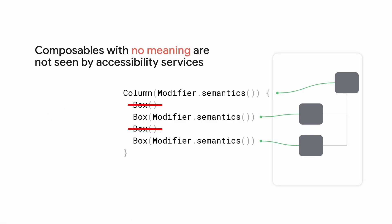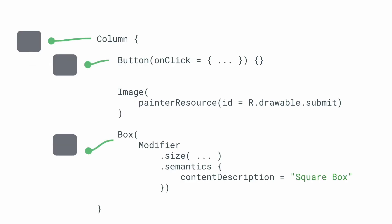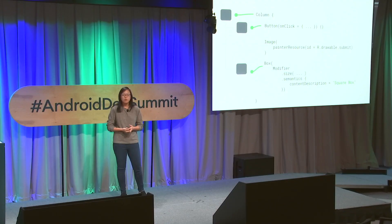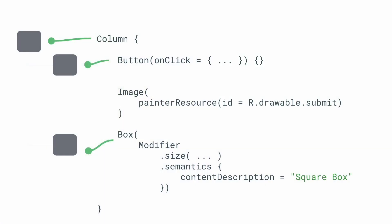Composables with no meaning are not included in the semantics tree, and therefore not seen by any accessibility services. Here's a concrete example where we have a composable with a column that includes a button, an image, and a box. The button has an on-click action associated with it, so it has some meaning and is included in the semantics tree. The box has a content description, so it also has meaning and is included. However, the image is only associated with a drawable — it has no meaning in terms of actions or labels, and therefore it's not included in the semantics tree and not seen by Accessibility Services at all.